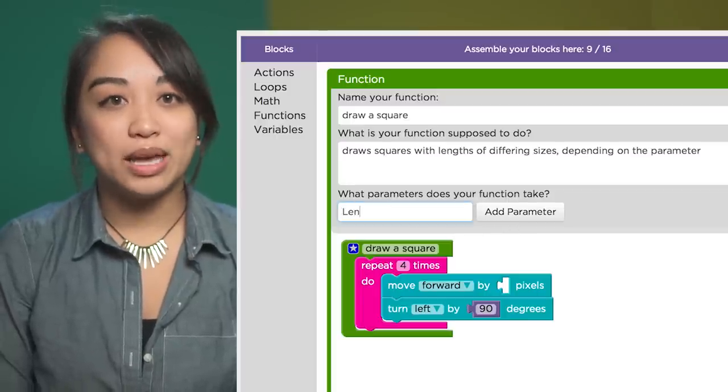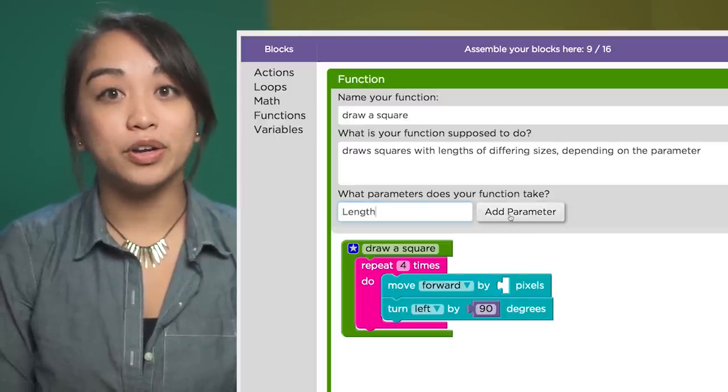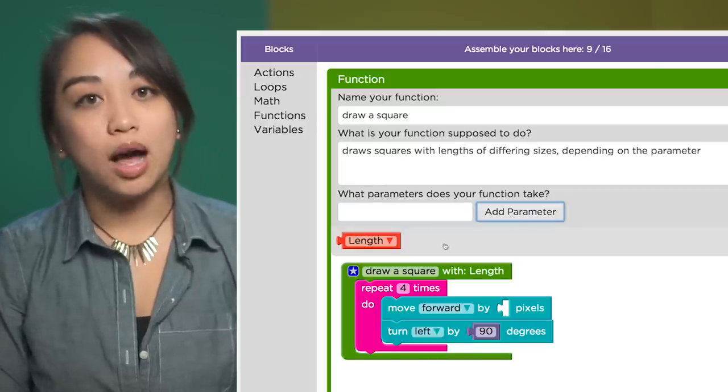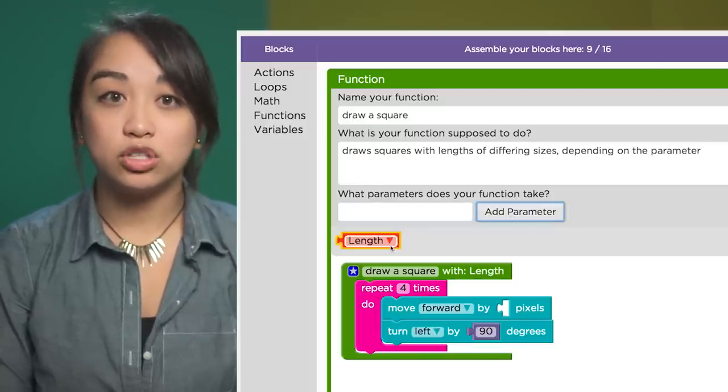Write the name of your parameter in the space and click add parameter. This will create a red block with the name of the parameter you just created.